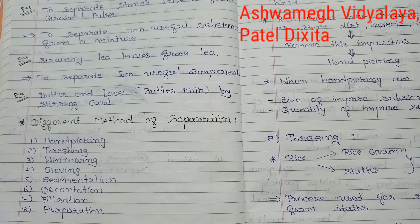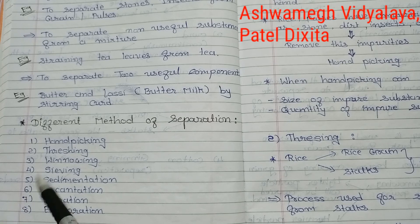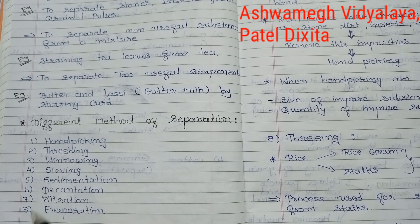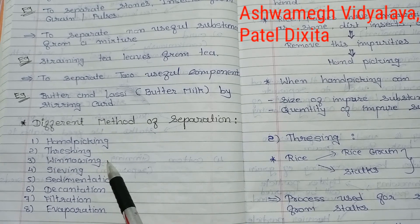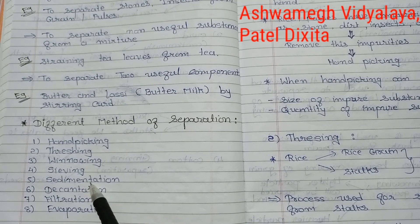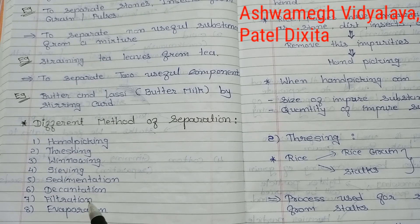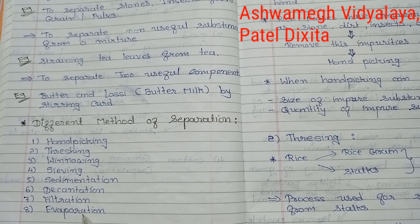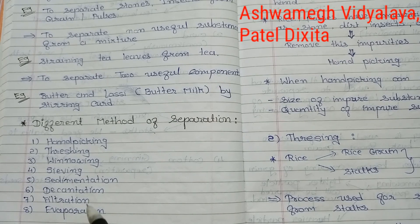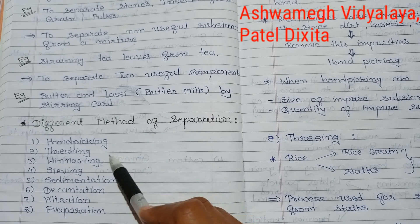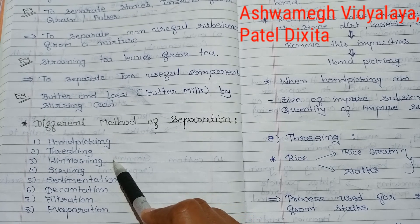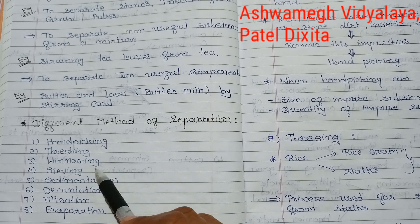Then we discuss about different methods of separation. There are eight methods of separation: first, hand-picking; second, threshing; then winnowing, sieving, sedimentation, decantation, filtration, and last, evaporation. We have already learned about hand-picking, threshing, and winnowing in previous lectures, and sieving in the last lecture.